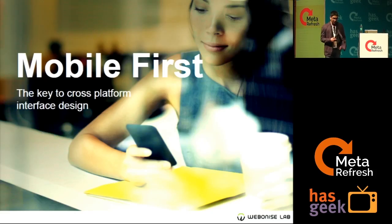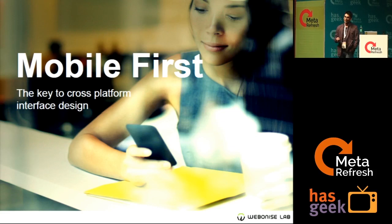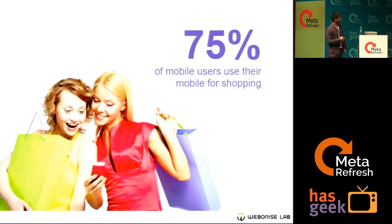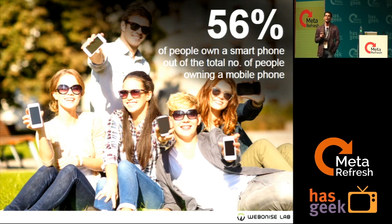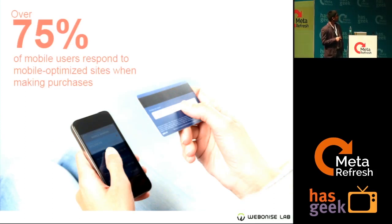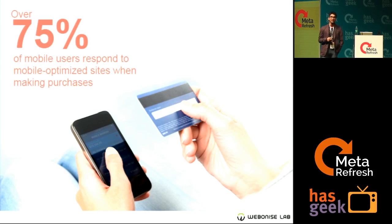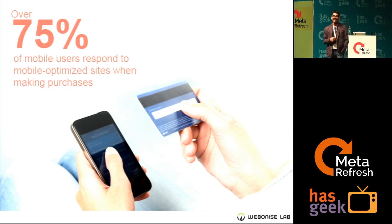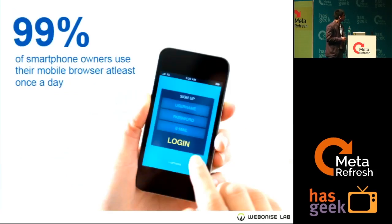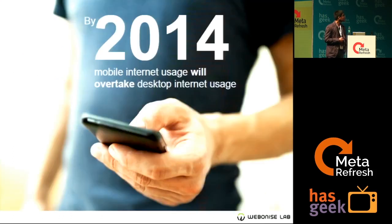So why mobile first? Let's look at some data gathered from big sites like Google and Flickr. 75% of mobile users use their mobile for shopping. 56% of phones sold are smartphones. 75% of mobile users respond to mobile-optimized sites when making a purchase — meaning for any e-commerce site, the site has to be optimized for mobile.